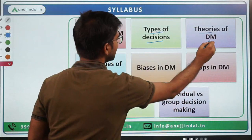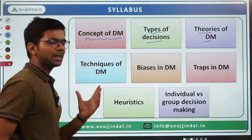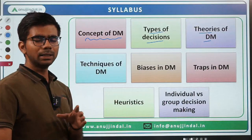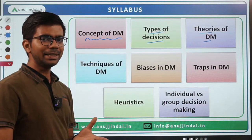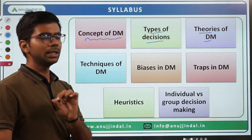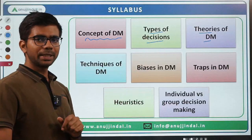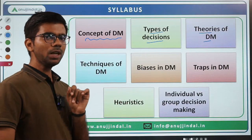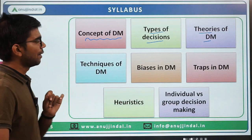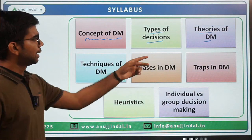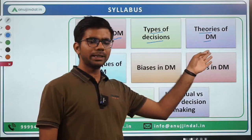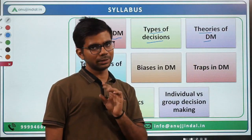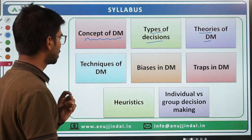Then the theories of decision making — some very important theories include prospect theory, theory of bounded rationality, rational decision making theory, and creative decision making process. There are different theories of decision making which have to be studied. There are also certain theories of management and leadership which talk about decision making, and those also need to be covered.